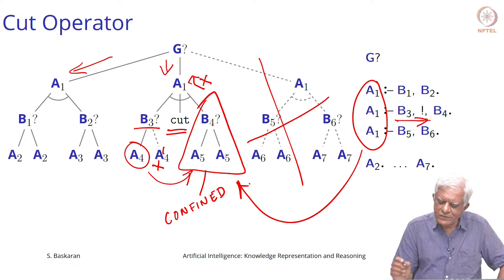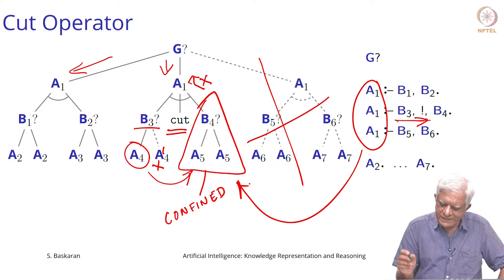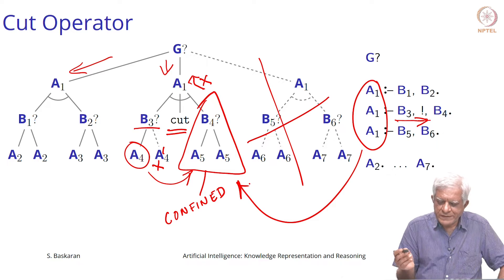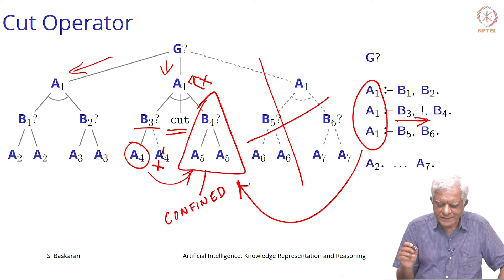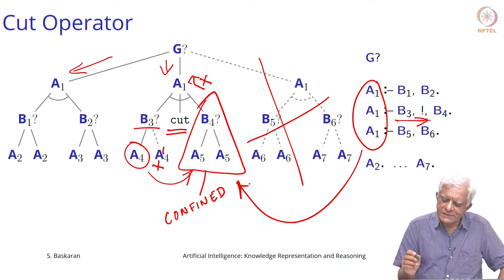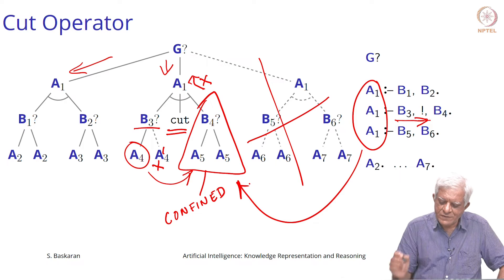If you have managed to show the first clause for a1, which is b3 in this case, once you have shown b3 is true you have to go on to b4. But what cut is saying is: go and see if you can make b4 true, but do not try to make a1 true by any other means. You are committed to the solution that you have found for b3, and whatever you can find for b4 is the best that you can do. Any other options for solving a1 are not available to you.